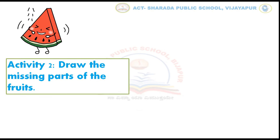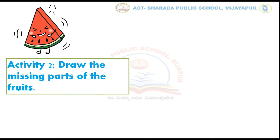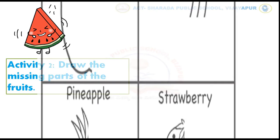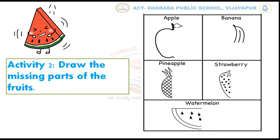Kids, let us do our second activity: draw the missing parts of the fruits. Dear parents, make sure your child identifies the fruits and help them to draw the missing parts. Children, in this activity, draw the missing parts of the fruits and then color it. For example, I will draw the remaining part of the apple to complete this fruit, and then color it like this. In the same way, you have to complete this activity.